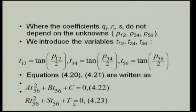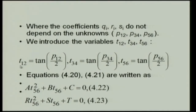After eliminating T56, I am left with equations only in T34 and T12. I form the Sylvester matrix once more to eliminate T34, and finally land up with a polynomial equation in T12 alone, which I then solve.